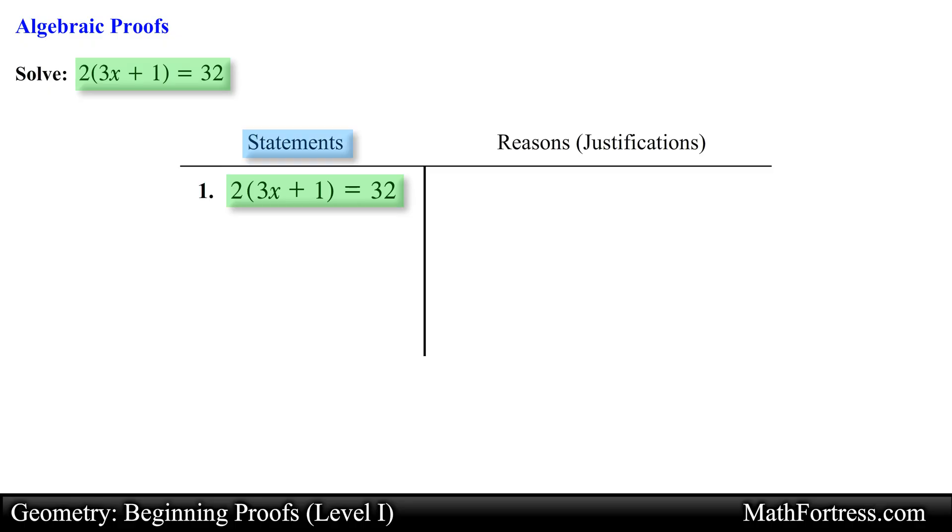For example, say that we want to solve the following equation and we are asked to prove it. We start our two-column proof by writing the equation on the left column as follows. We will write all of our statements on the left column creating a new line for each statement. On the right column we will write out our reasons or justifications of the statements from the left column.